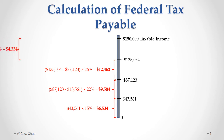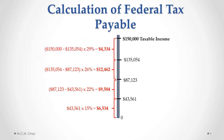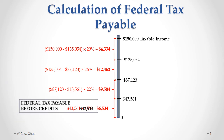Our last and fourth layer of the cake, which brings us up to $150,000 of taxable income, is taxed at a rate of 29%, which gives us tax of $4,334. When we add up the taxes for all four of those layers together,